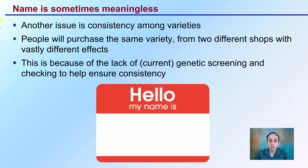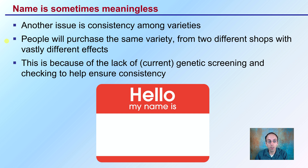Names are sometimes meaningless. Another issue is consistency among the varieties. People will purchase the same variety from two different shops with vastly different effects. This is because of the lack of current genetic screening and checking to help ensure consistency — this is part of the broader issues with cannabis, the lack of consistency on many fronts.